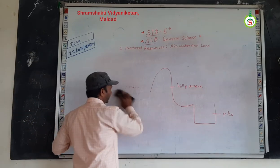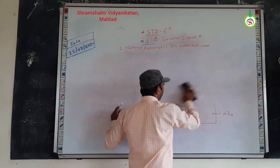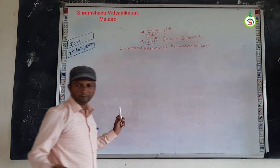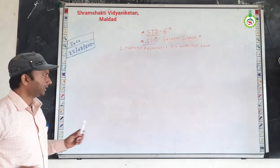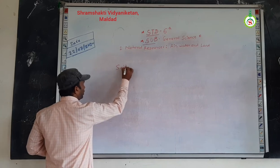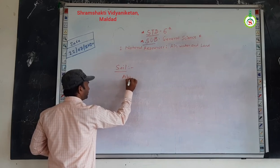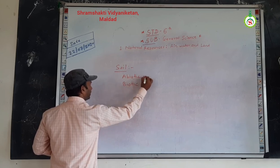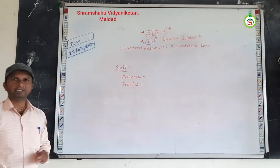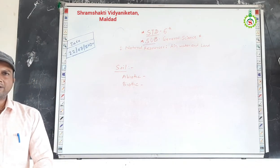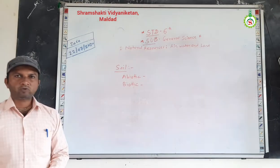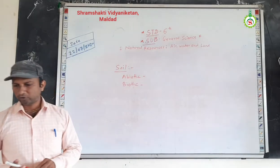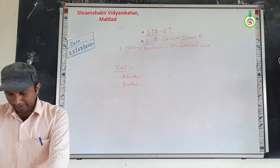Soil consists of two types of components: biotic components and abiotic components. What do we mean by abiotic components? It means the non-living things present in the soil are called abiotic components. The components which are made from living things come in the category of biotic components. These are the two types of components present in the soil.